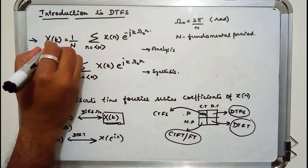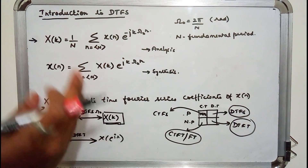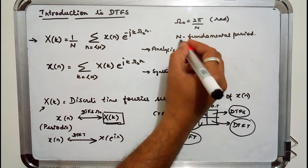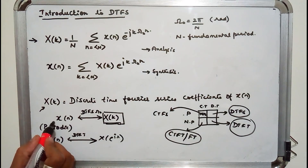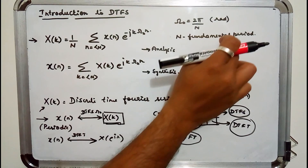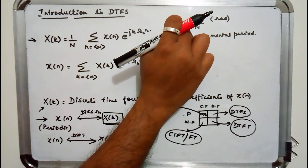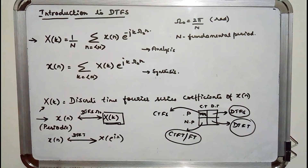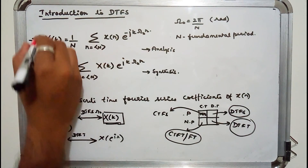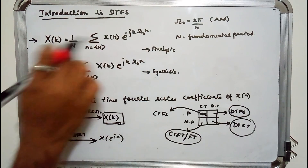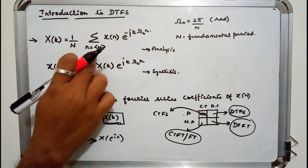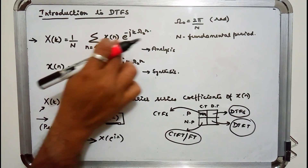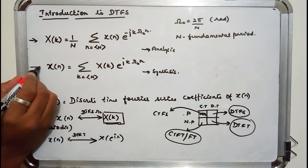Here, k is the index for coefficients in the frequency domain. Capital N represents the fundamental period of the periodic input signal x of n. Since the signal is periodic it has a period, so omega-naught is the fundamental angular frequency, equal to 2 pi over N, in radians per second. This is the analysis equation used to find the discrete time Fourier series coefficient x of k.